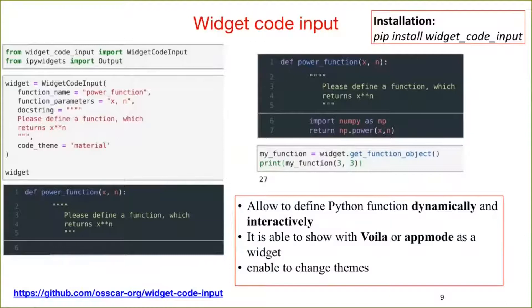So, we develop the third widget, which is called code input. The widget creates a code input area which allows the user to define a function. For example, the image on the left shows the code creates a code input widget with an instruction. This has parameters giving the function name and input parameters. This also shows an instruction that we want the user to write a power function. The figure on the right shows that we can complete the function in the widget. Later, the function can be used by calling get underscore function underscore object.